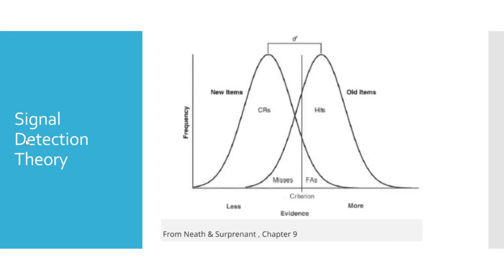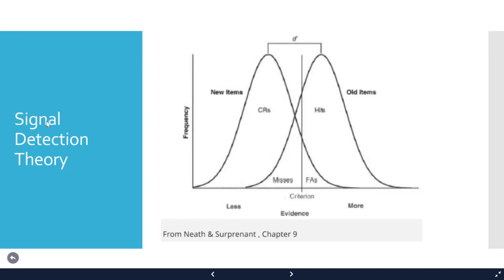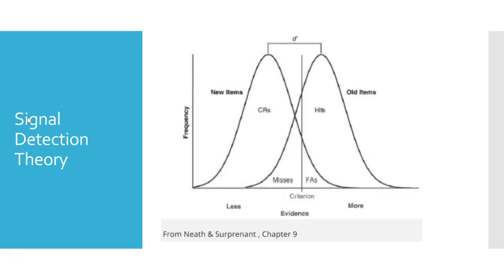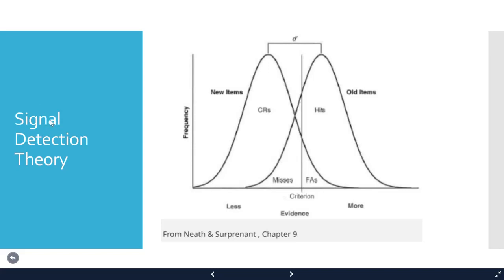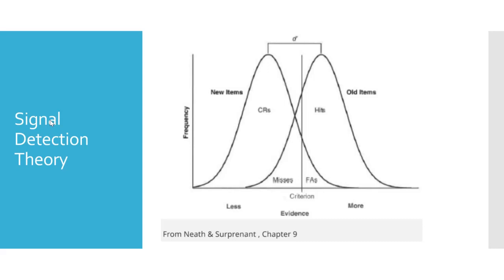Signal detection theory can be applied to all kinds of binary judgment behaviors. In radiology, radiologists look at x-ray images and try to detect which show evidence of cancer and which are normal — detecting signal from amongst other information. In engineering, a smoke alarm detects smoke in the air from amongst other air particles; the device samples repeatedly, evaluating air quality to detect whether there's a fire. Signal detection theory can be applied to many fields.